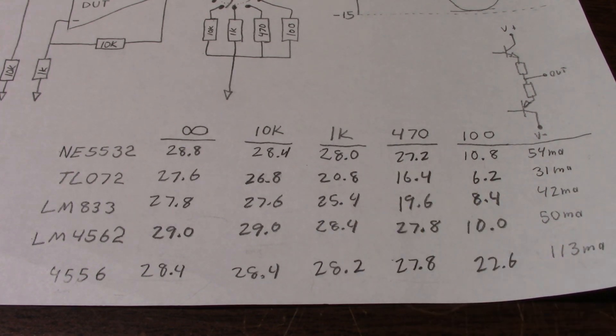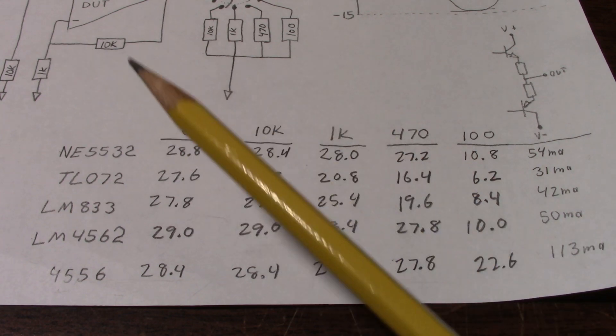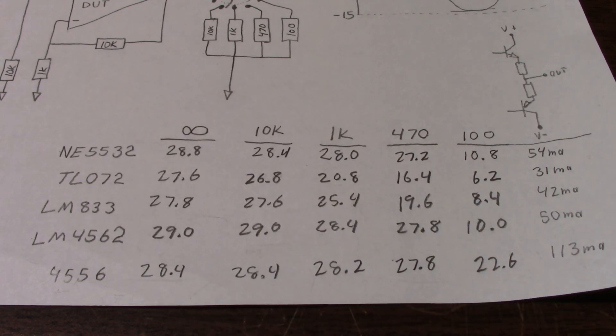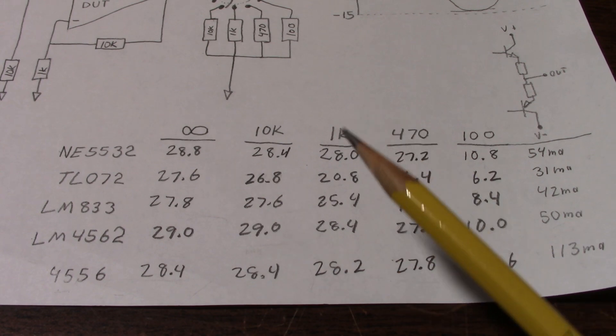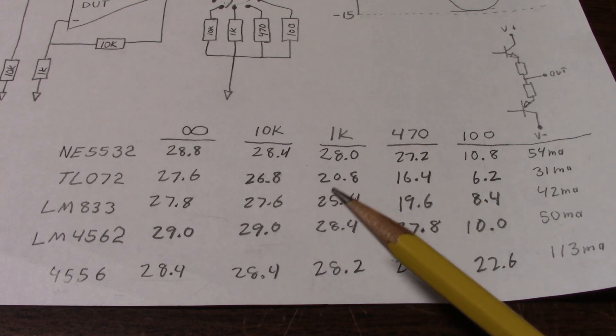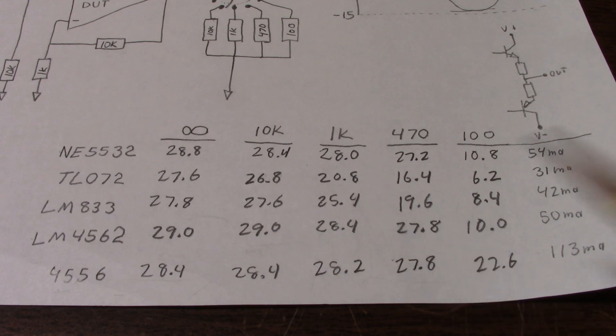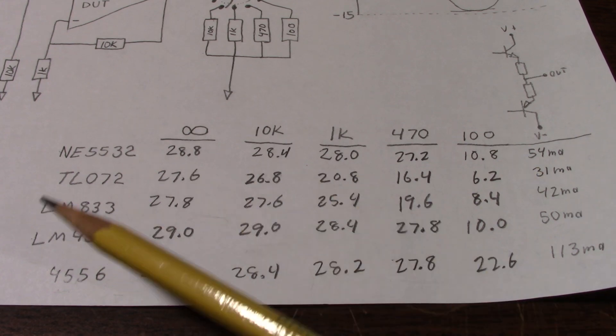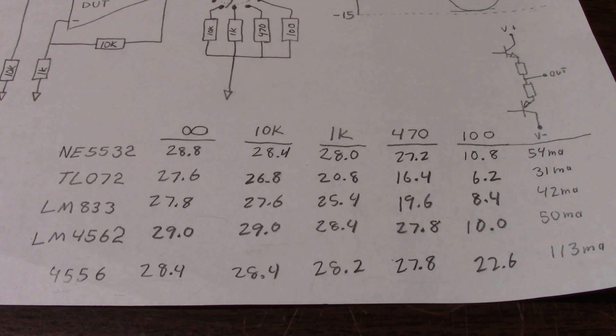See how the output voltage collapsed? We're down to 20.8 volts peak to peak while the other chips are doing far better. Pretty disappointing as these chips are designed for driving line type level loads, and I would consider a 1k load probably on the low end of that.